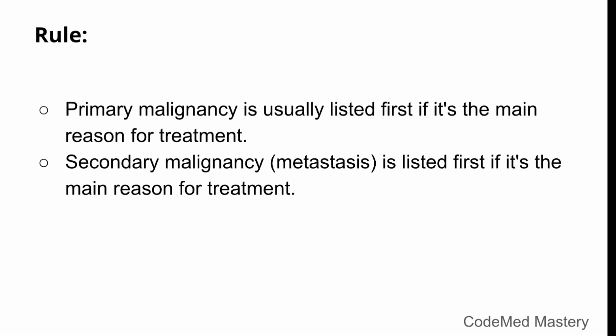There is an important rule: primary malignancy is usually listed first if it is the main reason for treatment, and secondary malignancy — that is, metastasis — is listed first if it is the main reason for treatment. Metastasis is a process by which cancer cells break off from the original tumor, enter the bloodstream or lymphatic system, and spread to other parts of the body, forming new tumors. So metastasis means secondary malignancy.